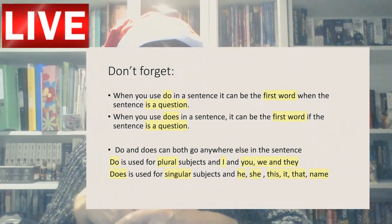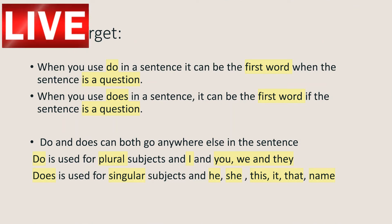Here's the recap of the rules: When you use 'do' or 'does' in a sentence, it can be the first word when the sentence is a question. Both 'do' and 'does' can go anywhere else in a sentence if it's not a question. 'Do' is used for plural subjects — more than one — and with I, you, we, and they. 'Does' is used for singular subjects — one subject — and with he, she, this, it, that, and names.